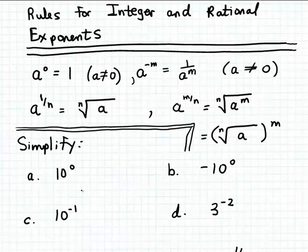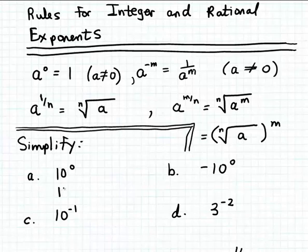Let's look at some examples, starting with example A. Suppose we want to simplify 10 to the zeroth power. Here 10 is the base and 0 is the exponent. First, let's recall how to raise 10 to a natural number power — for instance, 10 to the third power.